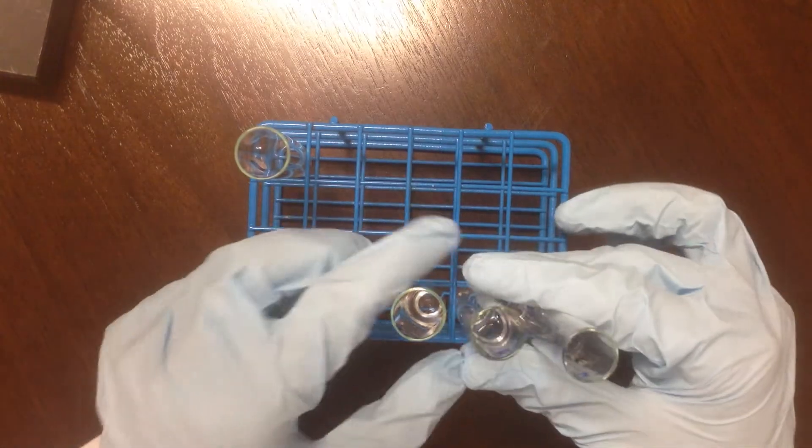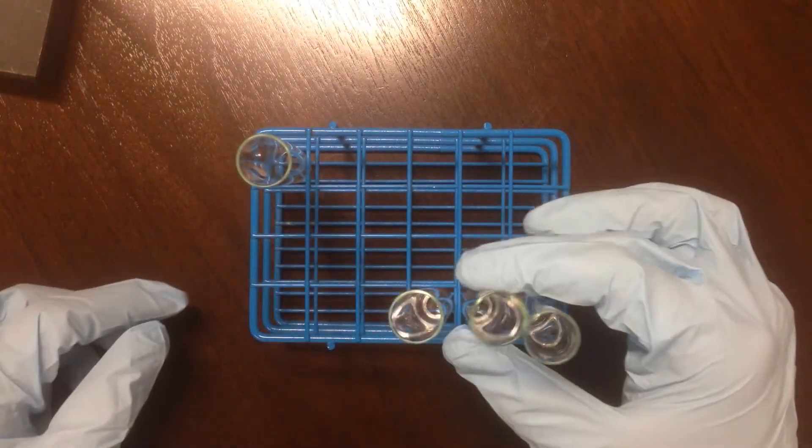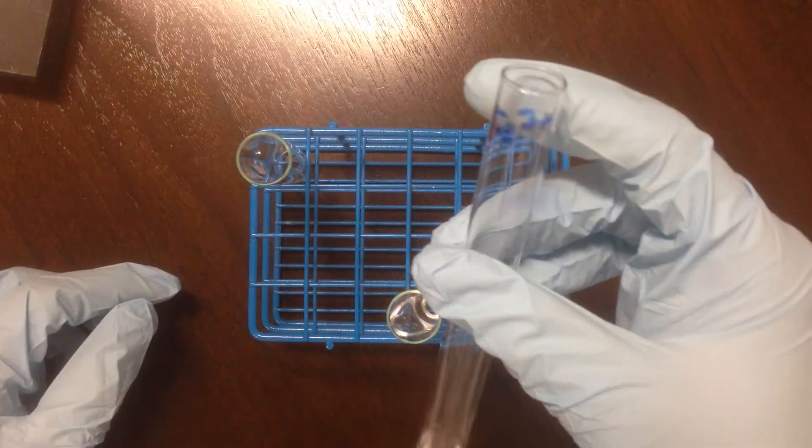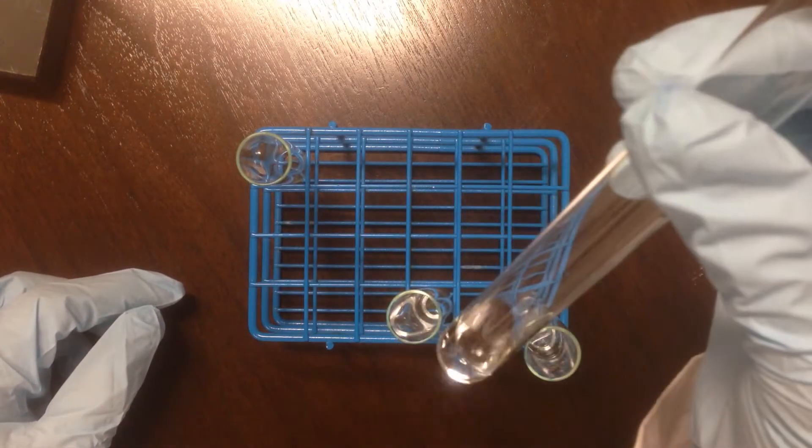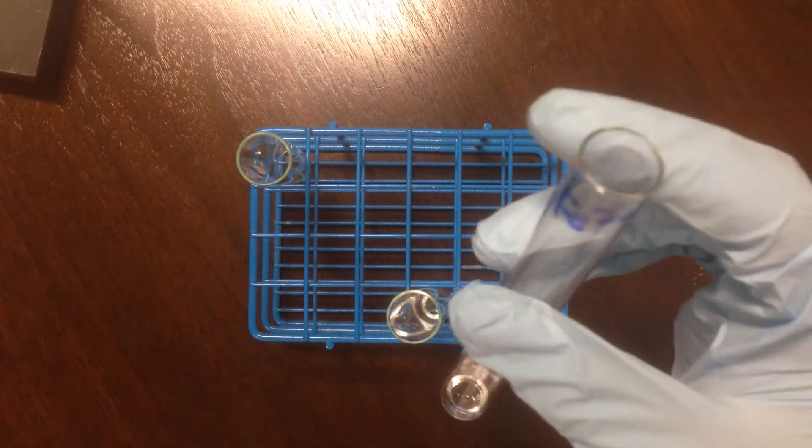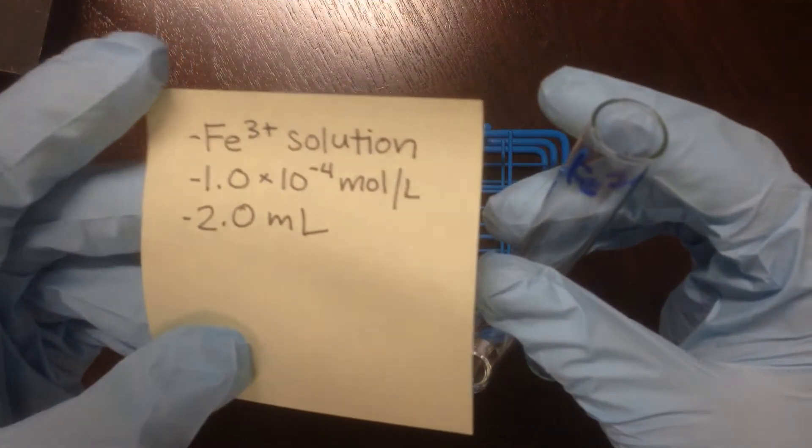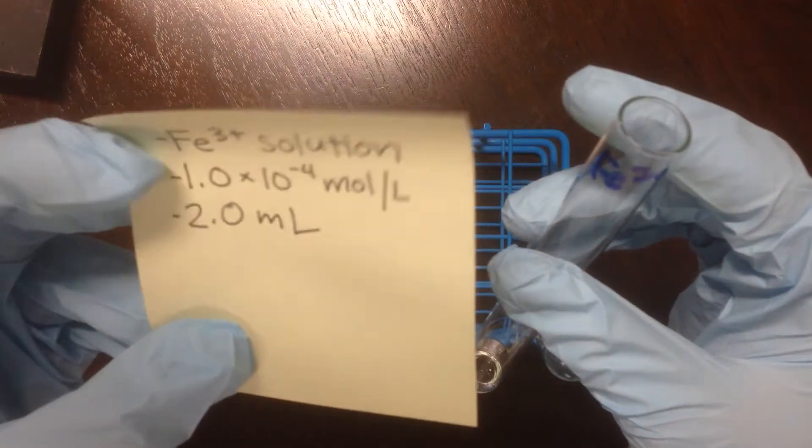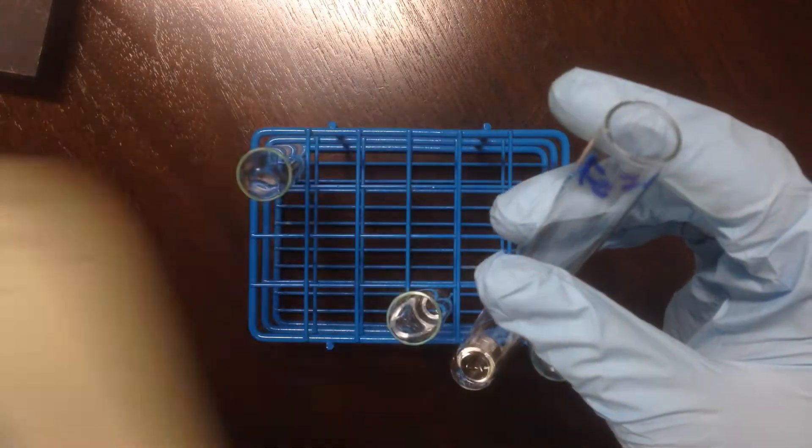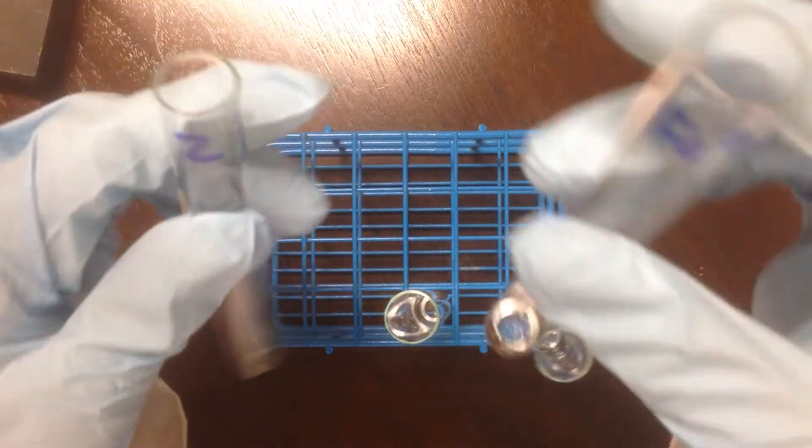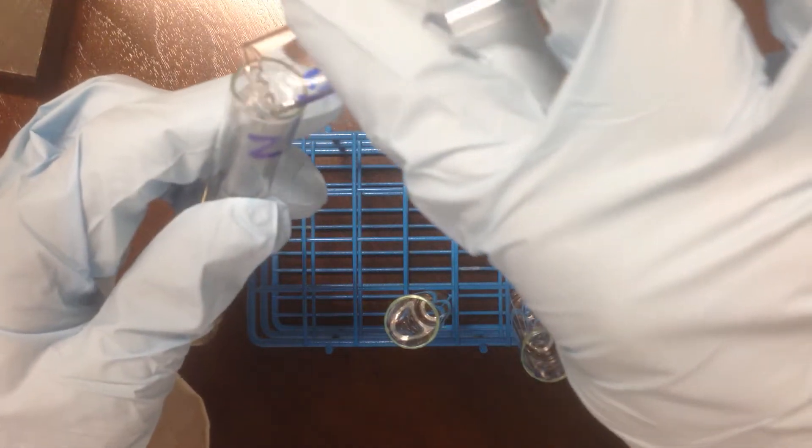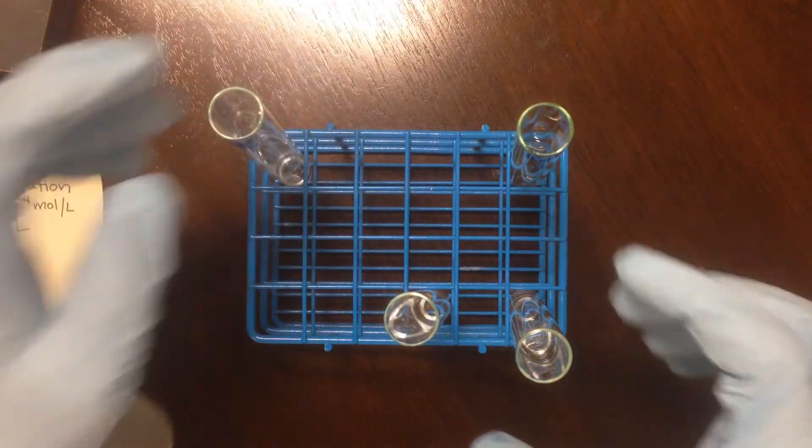I've got three test tubes containing the three solutions to be added to the holding tube. The first is the Fe³⁺ tube. You can see it's a transparent solution there. This is 2 milliliters of a diluted solution that has a concentration of 1×10⁻⁴ moles per liter. This is diluted relative to the stock. I'm going to add this in first to tube number 2.